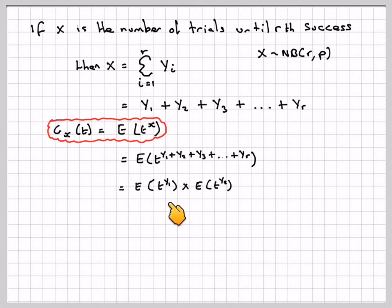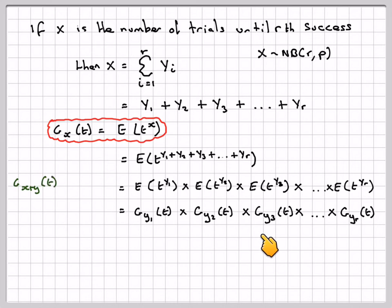So it's going to be E of t to the Y_1 times E of t to the Y_2 times E of t to the Y_3 times E of t to the Y_r. Now that's the same as doing G_Y1(t) times G_Y2(t) times G_Y3(t) times G_Yr(t).